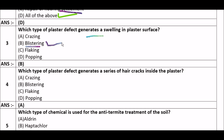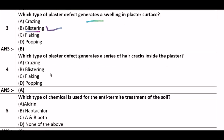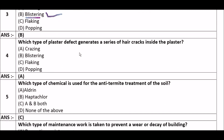Next question: Which type of plaster defect generates a series of hair cracks inside the plaster? Option A: crazing, option B: blistering, option C: flacking, option D: popping. The right answer is option A, crazing. Crazing type of plaster defect generates a series of hair cracks inside the plaster.